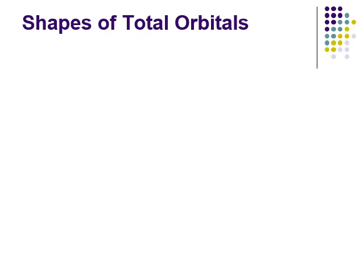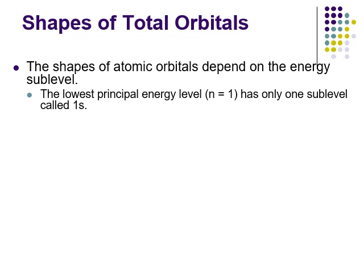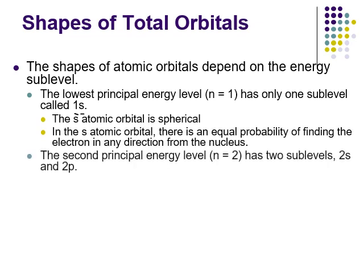Now let's see how this all comes together. The shapes of atomic orbitals depend on the energy sublevel. In the first energy level, which has one sublevel, we call that sublevel 1s. The '1' tells us it's in the first energy level; the 's' tells us it's made up of S-type orbitals, which come in sets of one and are shaped like a sphere.